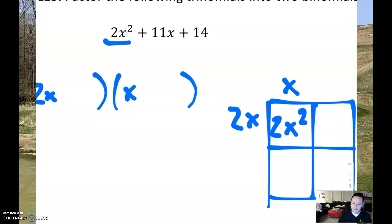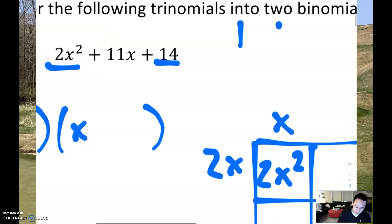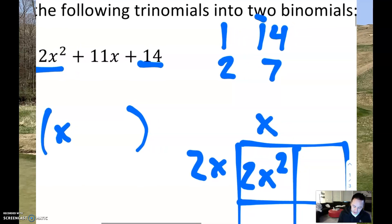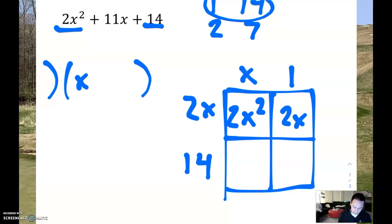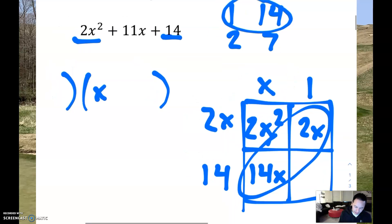Now for the rest of this we still have to find sets of numbers that multiply to 14. Let's come up with the different possibilities: we have 1 and 14, or 2 and 7. I'm going to start with 1 and 14 — let's put the 1 here and the 14 here. If I take 2x times 1 that gives me 2x, and 14 times x gives us 14x. We're trying to find the combination that adds up to 11x, but 14x plus 2x makes 16x — that's not going to work.